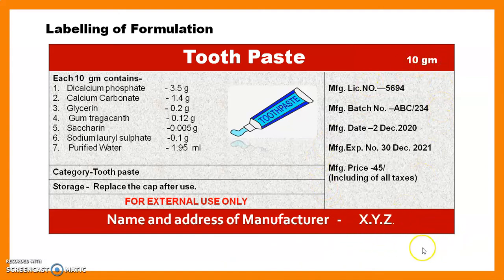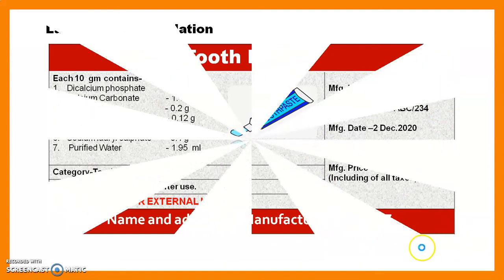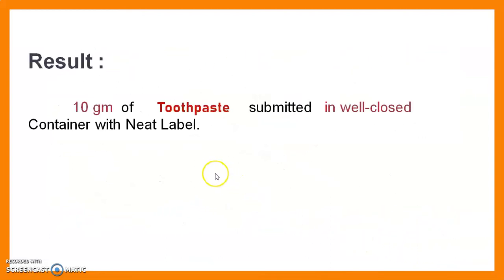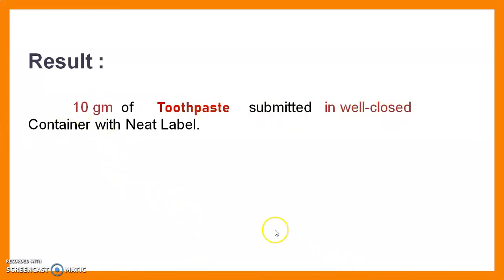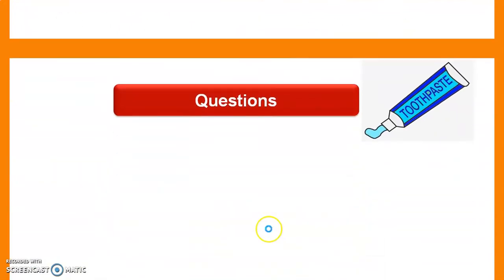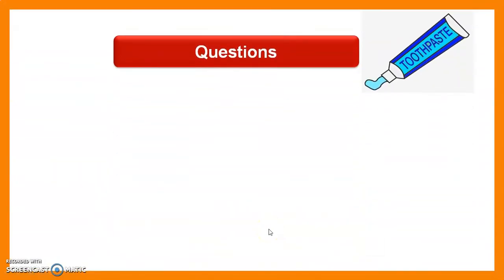Result: Today we prepared 10 grams of toothpaste, submitted in a well-closed container with a neat label. In this way we finish experiment number 30: to prepare, evaluate, and submit 10 grams of toothpaste.